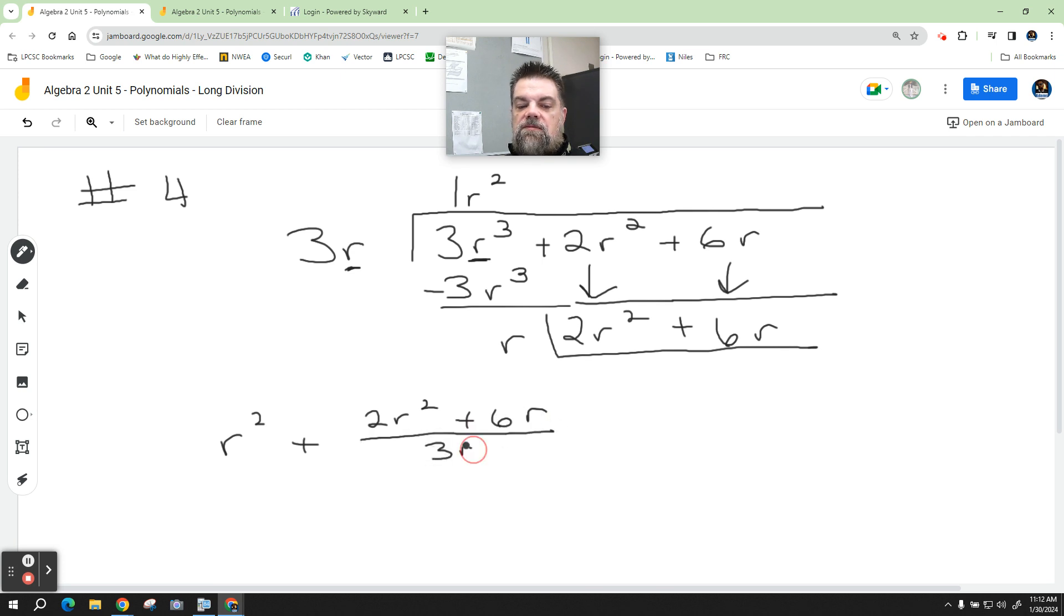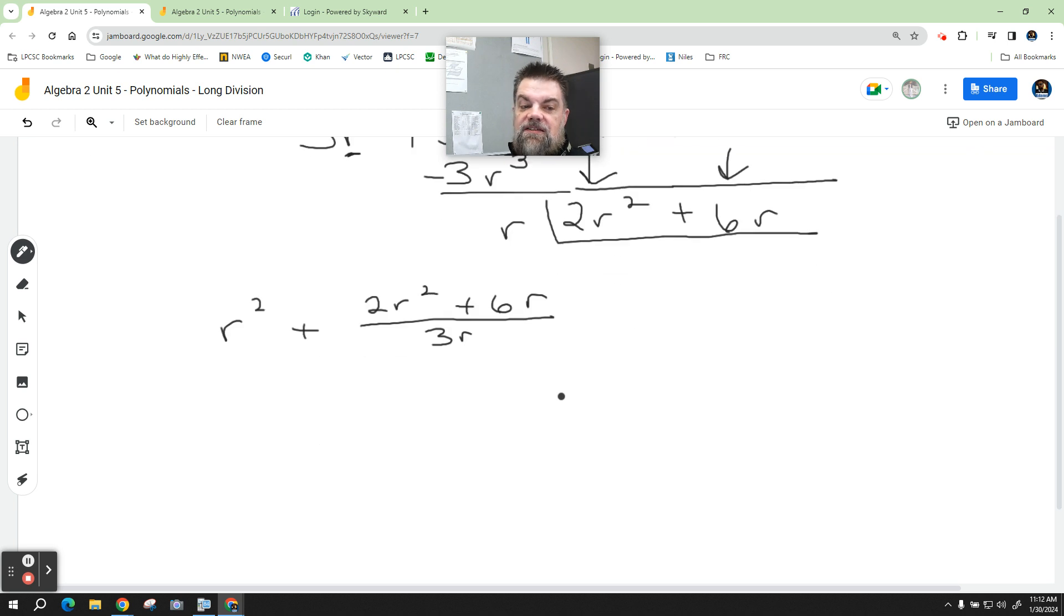So my answer is r squared plus 2r cubed or squared plus 6r all over 3r. Now watch this. On the next line I could say r squared plus, and I separate these two, 2r squared over 3r.